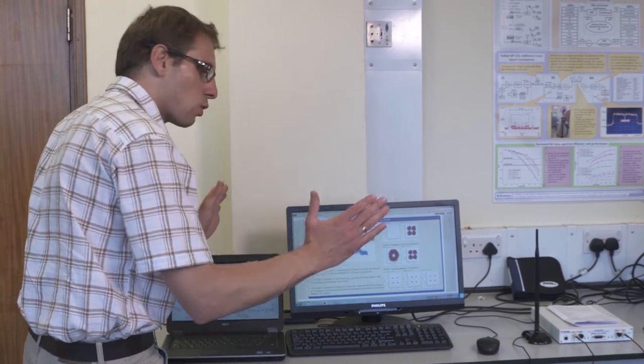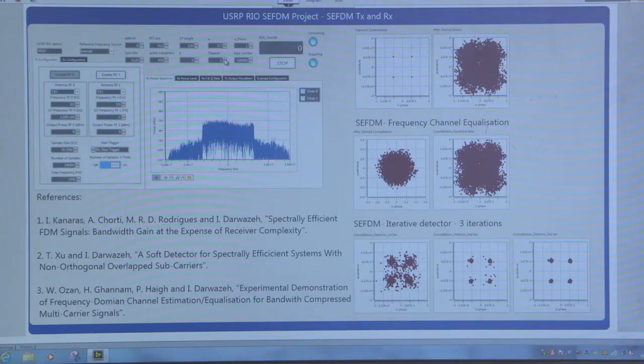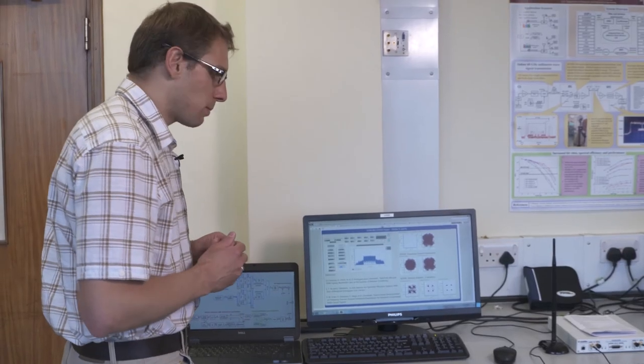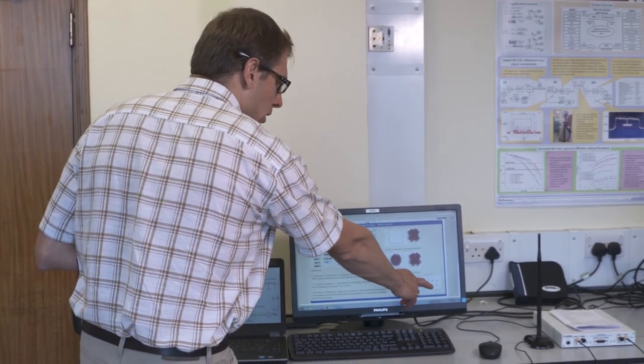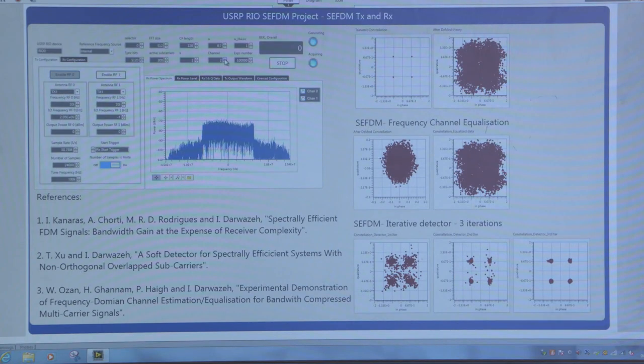So this is 0.9 which means we've got a 10% compression in bandwidth, 0.8, 0.7. So this is a 30% compression in bandwidth, and you can see here that our detector and decoder can still recover symbols successfully after just three iterations.